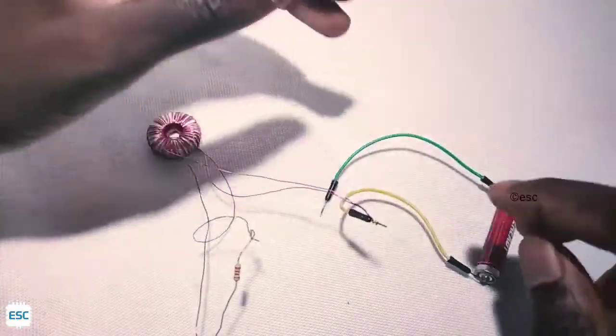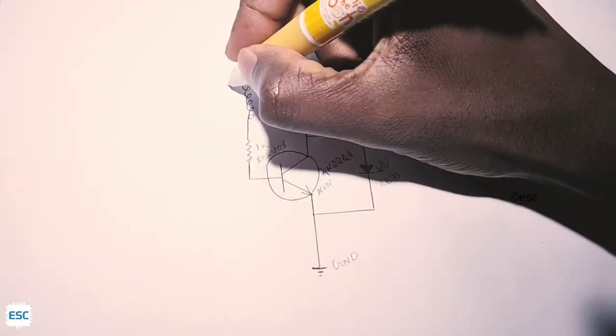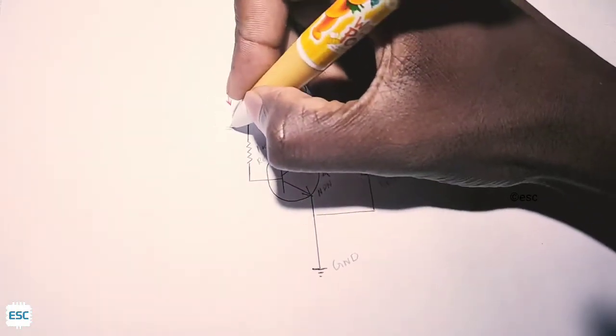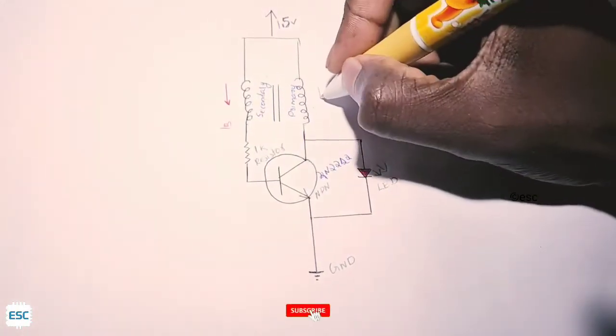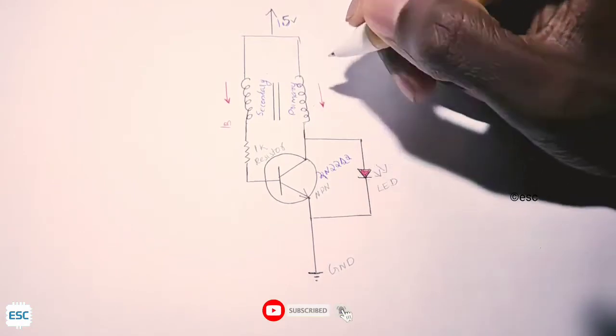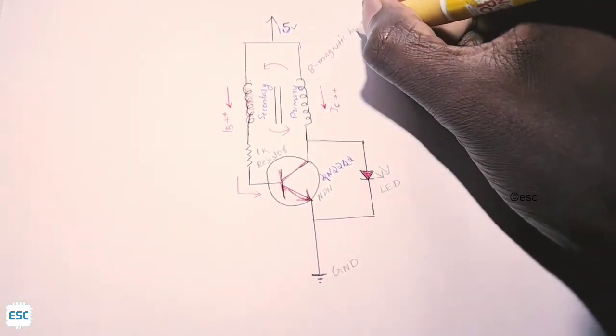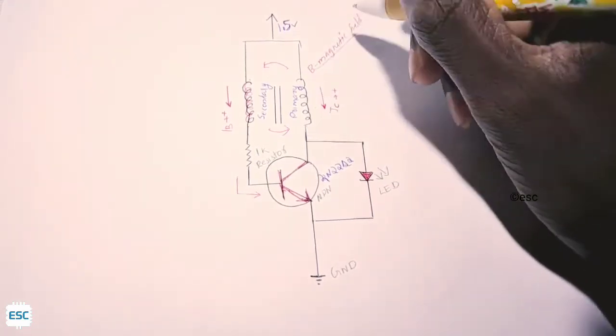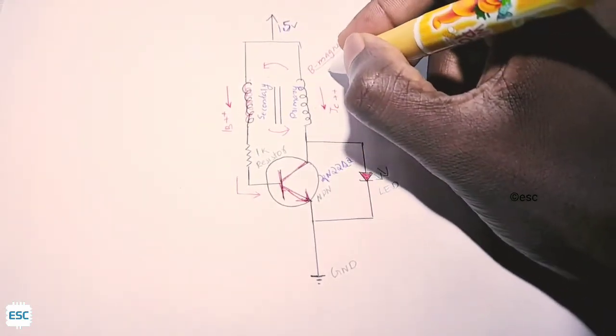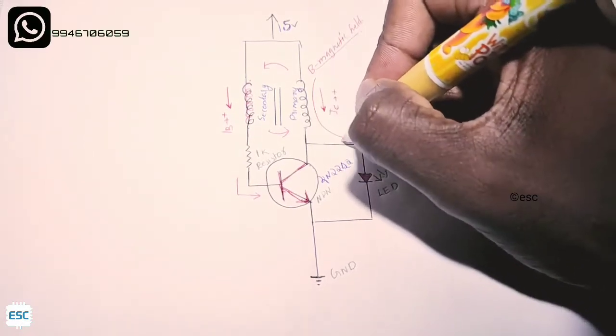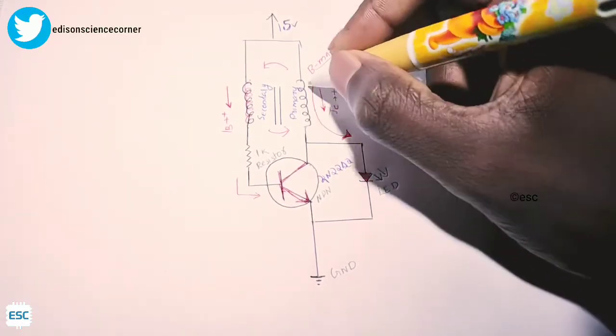Now let's see how this circuit works. At first very little base current and collector current flows through the transistor. The collector current induces a voltage in the secondary coil. This will increase the base current and this cycle repeats until saturation. At saturation the energy stored in the primary coil flows through LED.